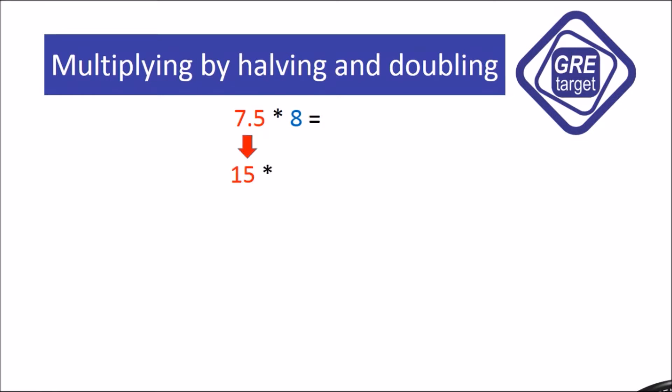We need to halve any one number, so we are halving 8 to get 4. We all know that 15 fours are 60. Let's take another example: 3.25 × 16.